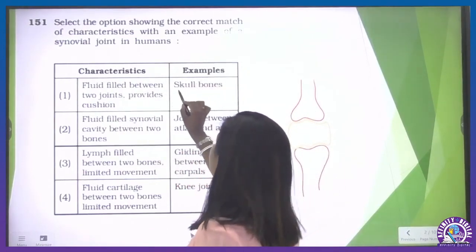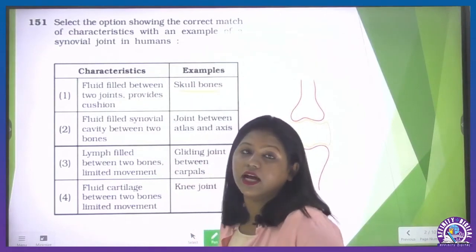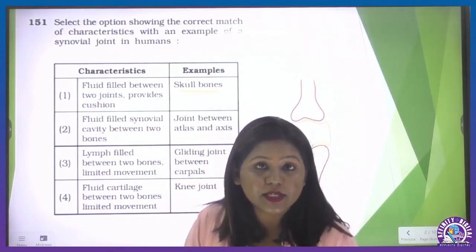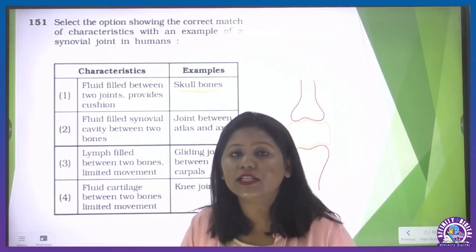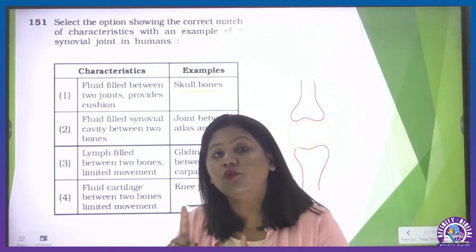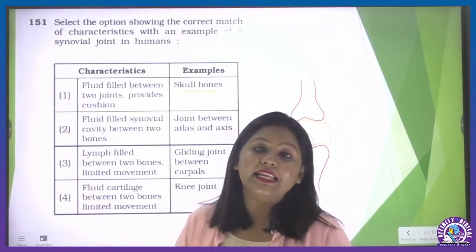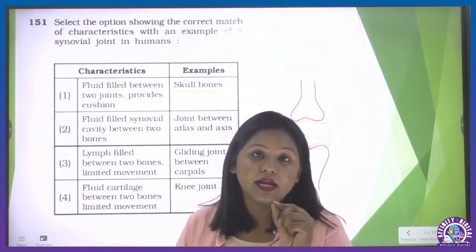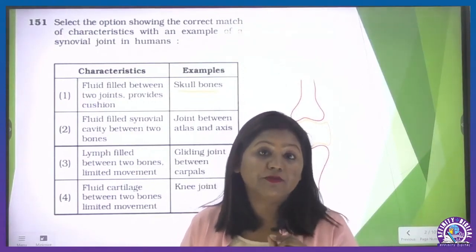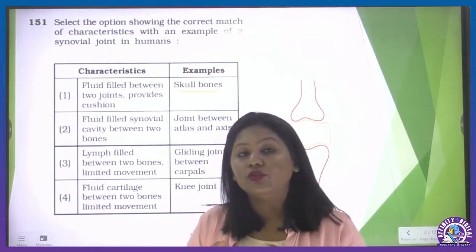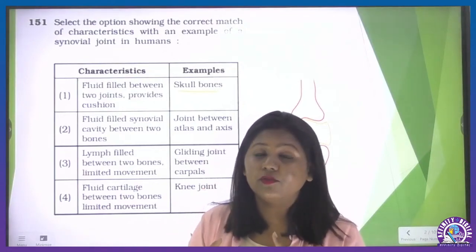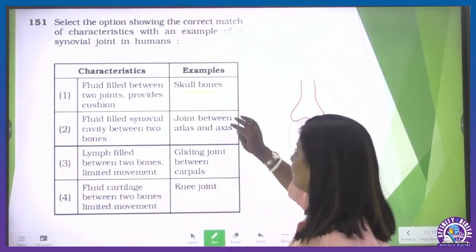Looking at the first option — skull bone would not be the answer, because skull bones are quite fixed with each other; it is called an immovable joint, whereas synovial joint is movable. Skull bone is made of fibers — we call that a fibrous joint. Synovial joint involves cartilage along with synovial fluid, so it is not applicable.